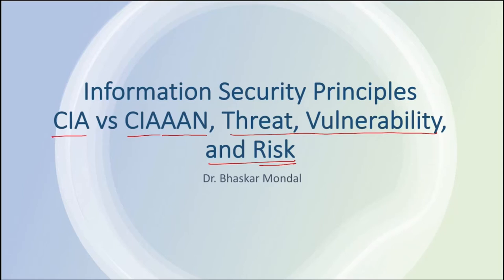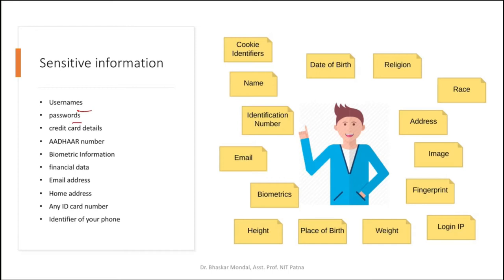What is sensitive information — what are the things we want to secure from illegal users or attackers? For a general person, sensitive information includes things like username, password, credit card details, biometric information, financial data, email address, home address, ID card number, and phone identifiers like IMEI number — so that nobody can clone your phone device.